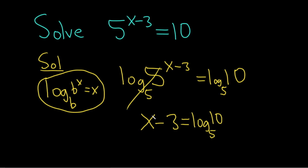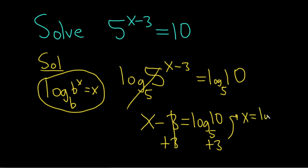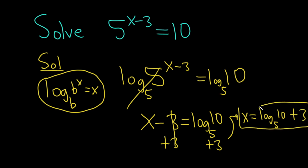We're almost done — we just have to solve for x. So now we'll add 3 to both sides. This leaves us with x equals log base 5 of 10 plus 3. And that is the solution to this equation.